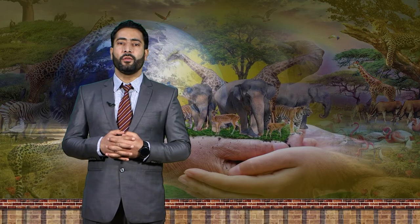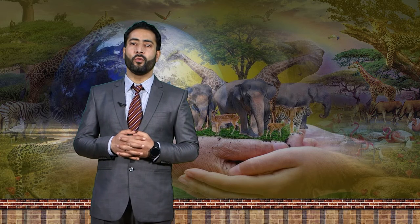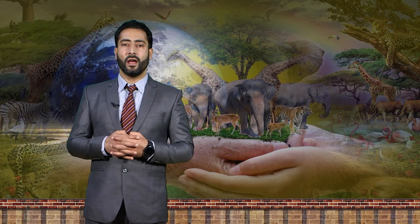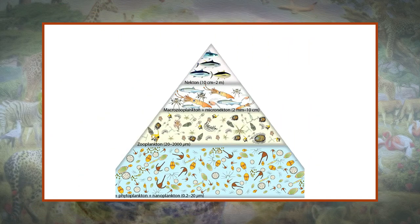Biomass plotted by trophic level may look like a pyramid but often looks more like a square. The reason is that larger organisms, often found in higher trophic levels, generally respire more slowly — they get less energy but hold on to what they do get for a longer time. So in the ocean, there is roughly the same biomass of algae, zooplankton, small fish, large fish, and even whales. The small algae turn over much faster, meaning they have a much higher rate of metabolism and loss to other organisms that eat them.